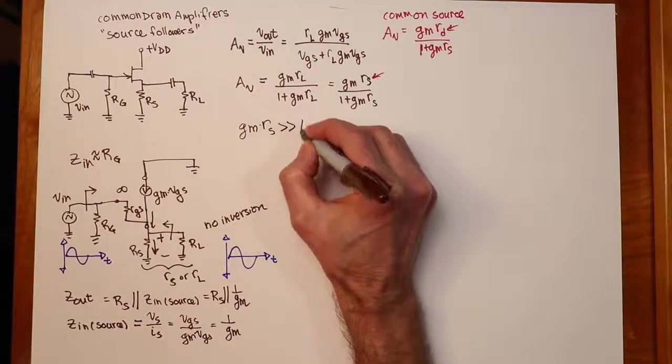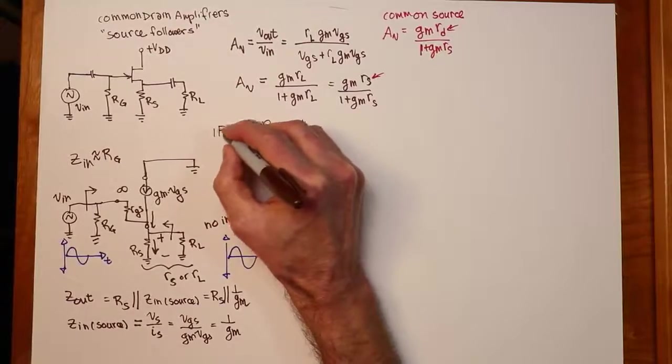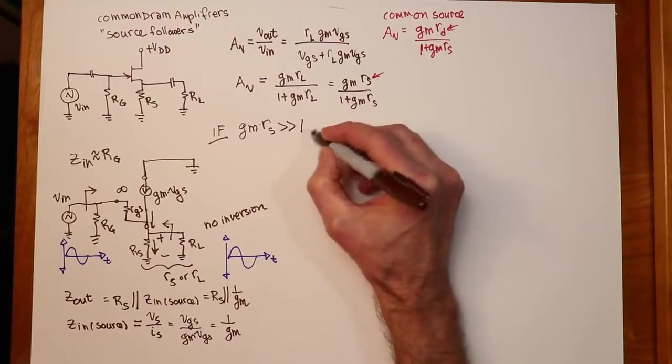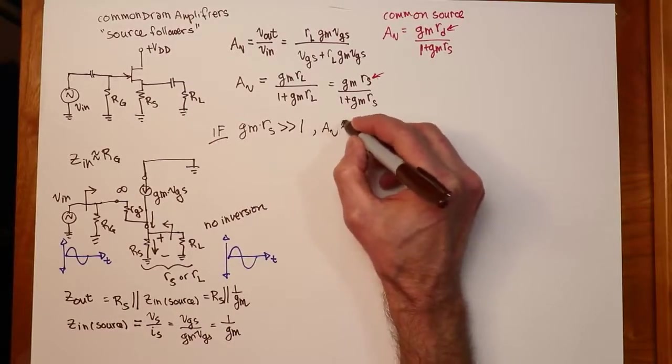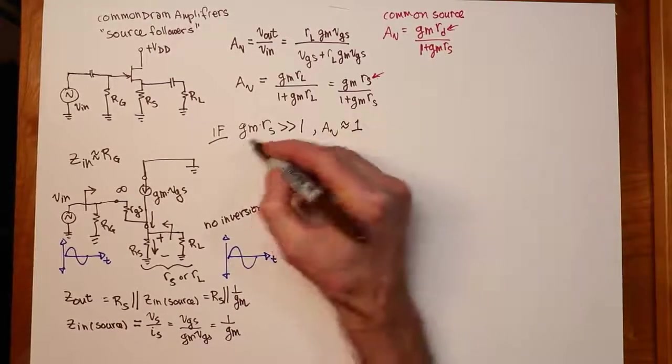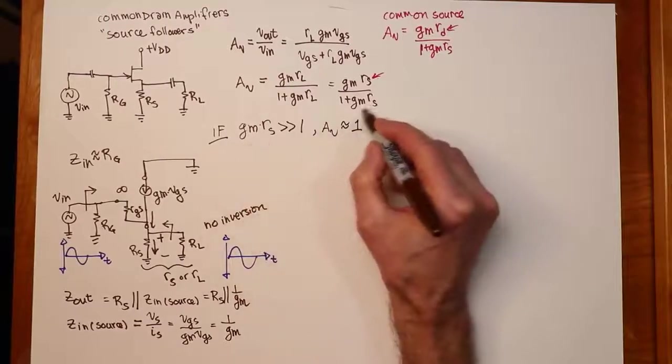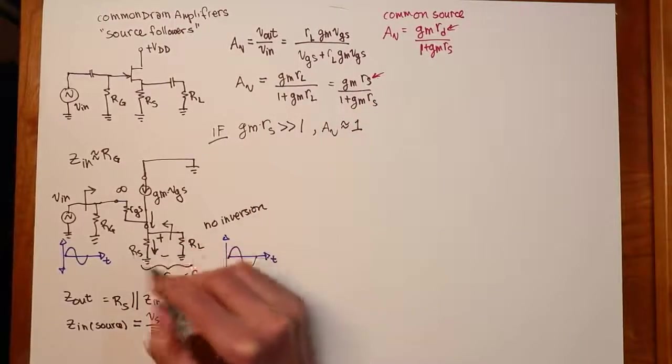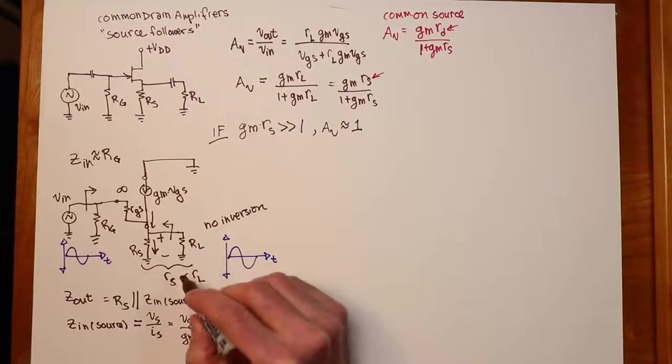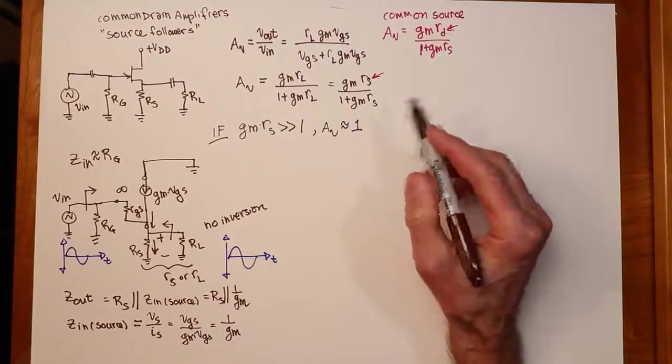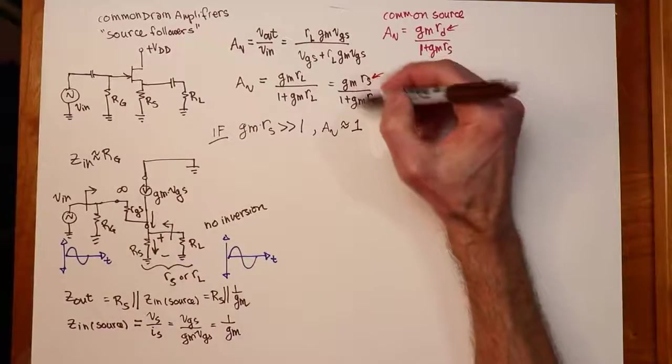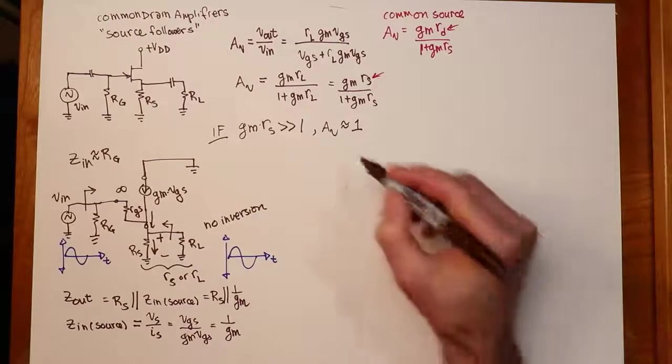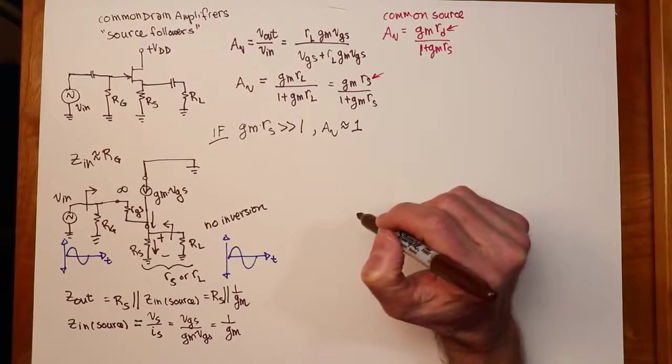So what you see here is that the denominator is always 1 plus GM*RS. If you're taking the output off the drain, you use RD. If you're taking the output off the source, you use RS. That's a little mnemonic aid kind of thing that you can use. So the formulation on this is sort of consistent. The trick here is you would like it to be the case that GM*RL or RS is much bigger than 1. If that's true, if GM*RS is much much bigger than 1, then AV is approximately 1. Ideally you would like a really big value of GM. That's really what you're focusing on.